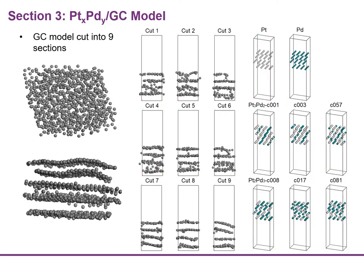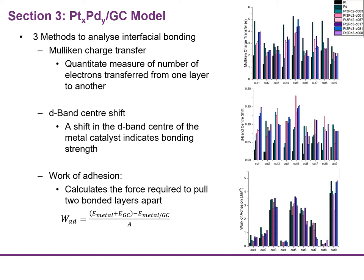In order to build the interfacial model, the glassy carbon was cut into nine different cuts and placed into periodic cells, along with eight different metal catalyst models that were developed. The interfacial model was then built by placing the metal on top of the glassy carbon substrate. After construction, three different methods were used to analyze the interfacial bonding strength.